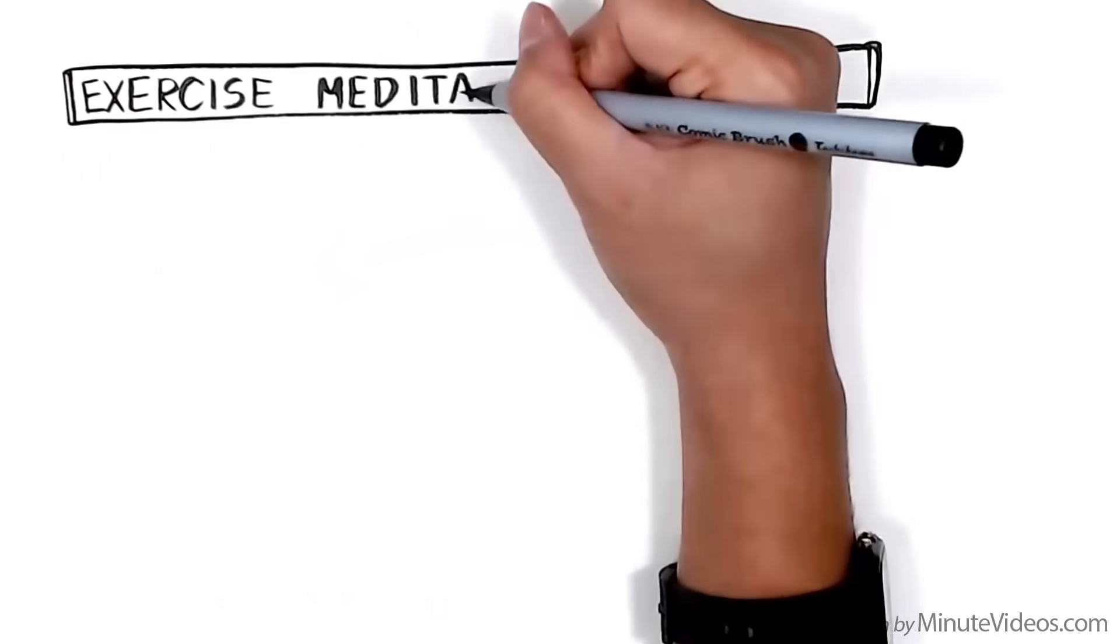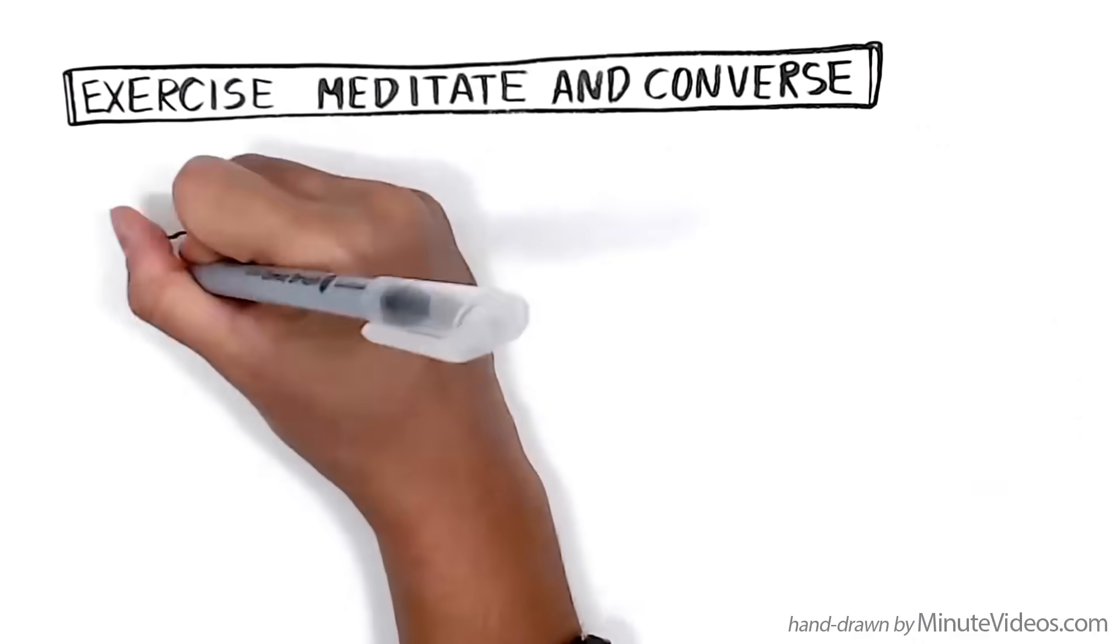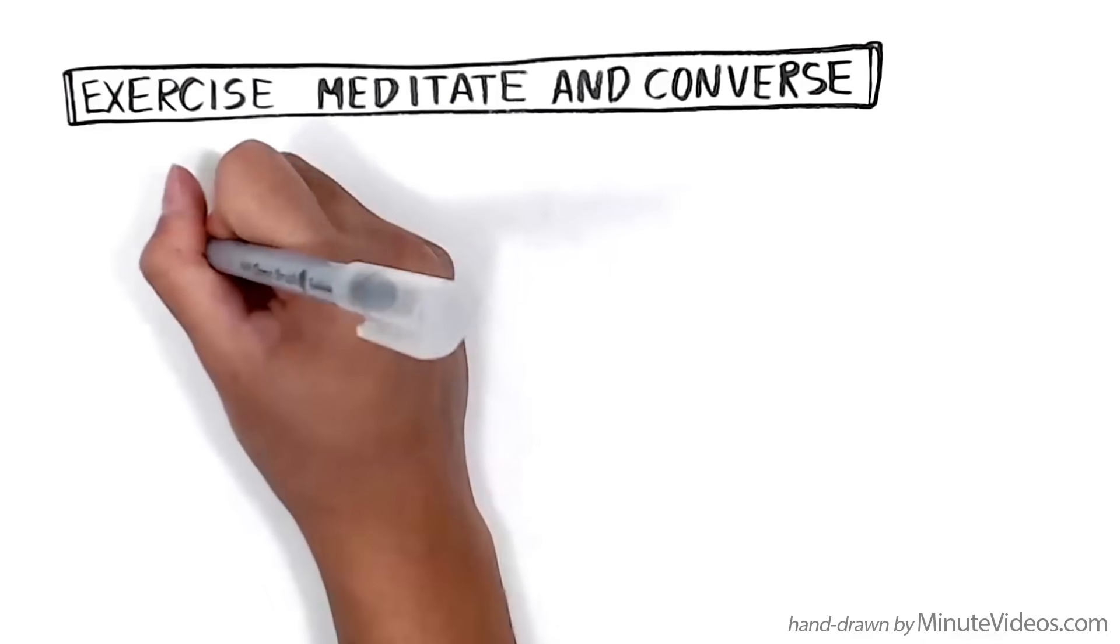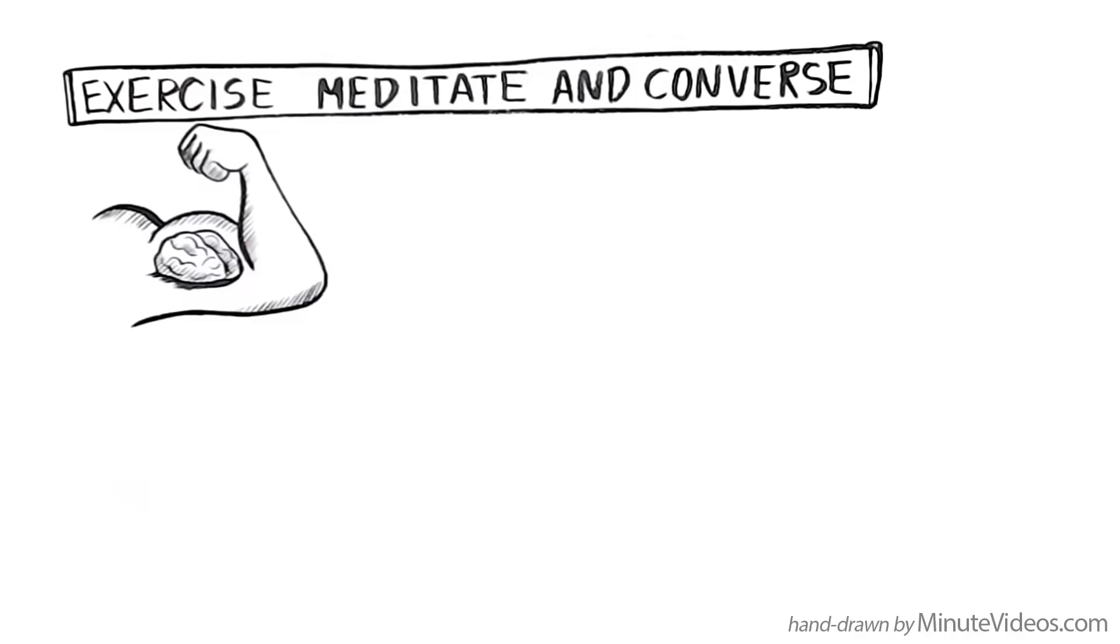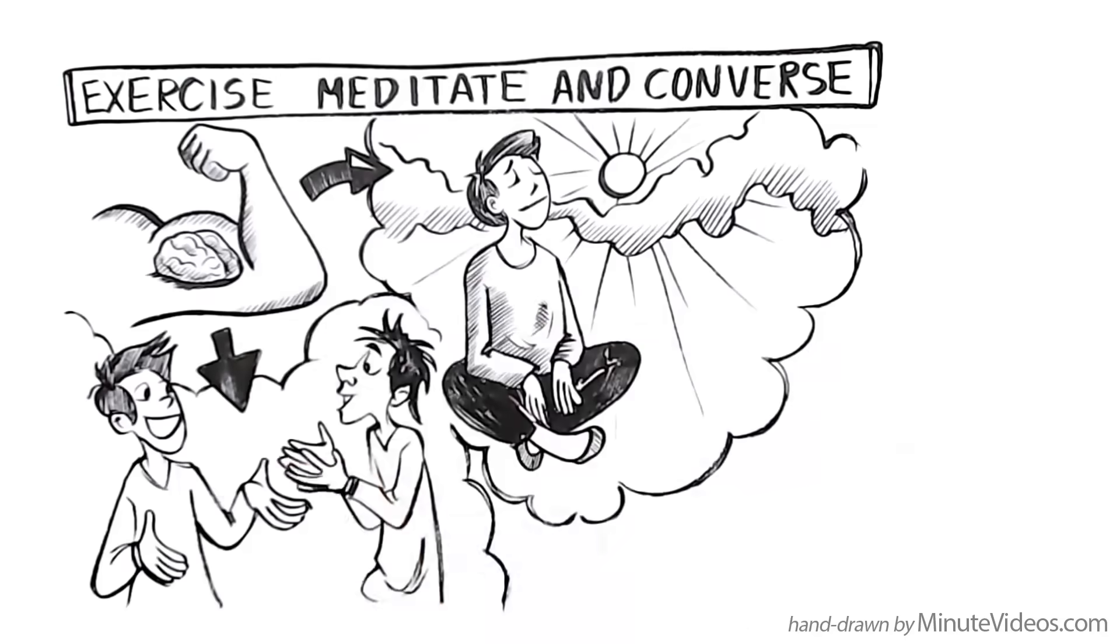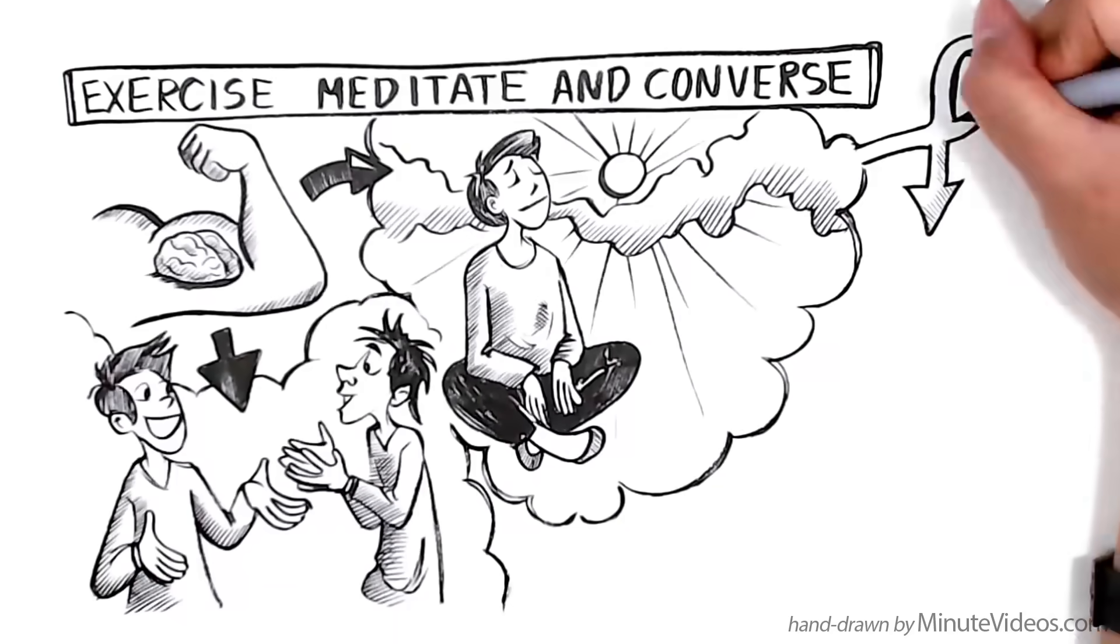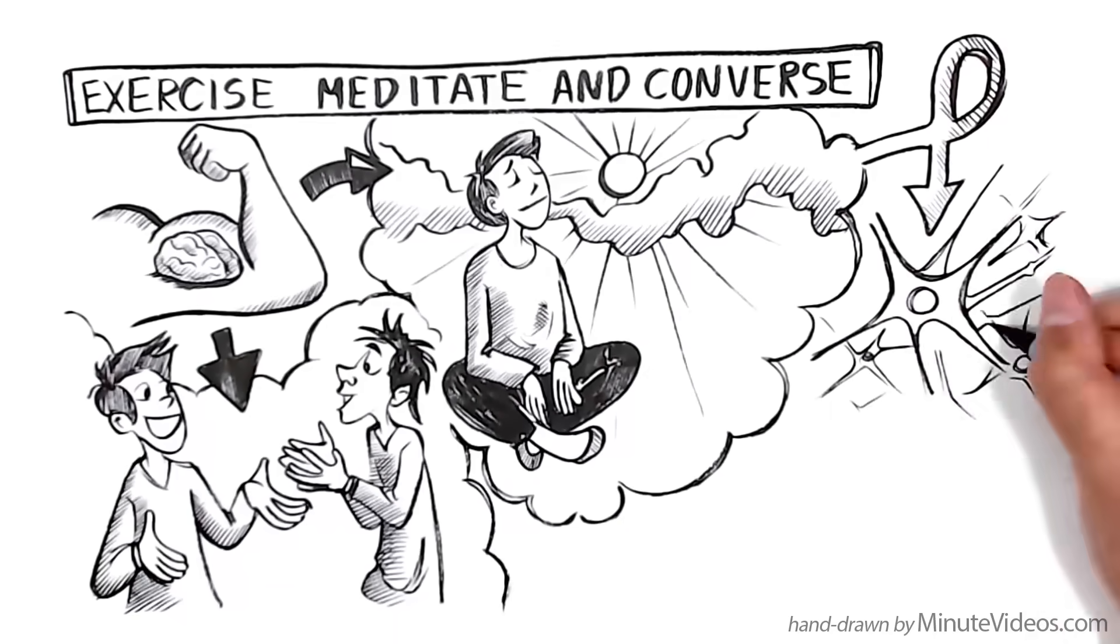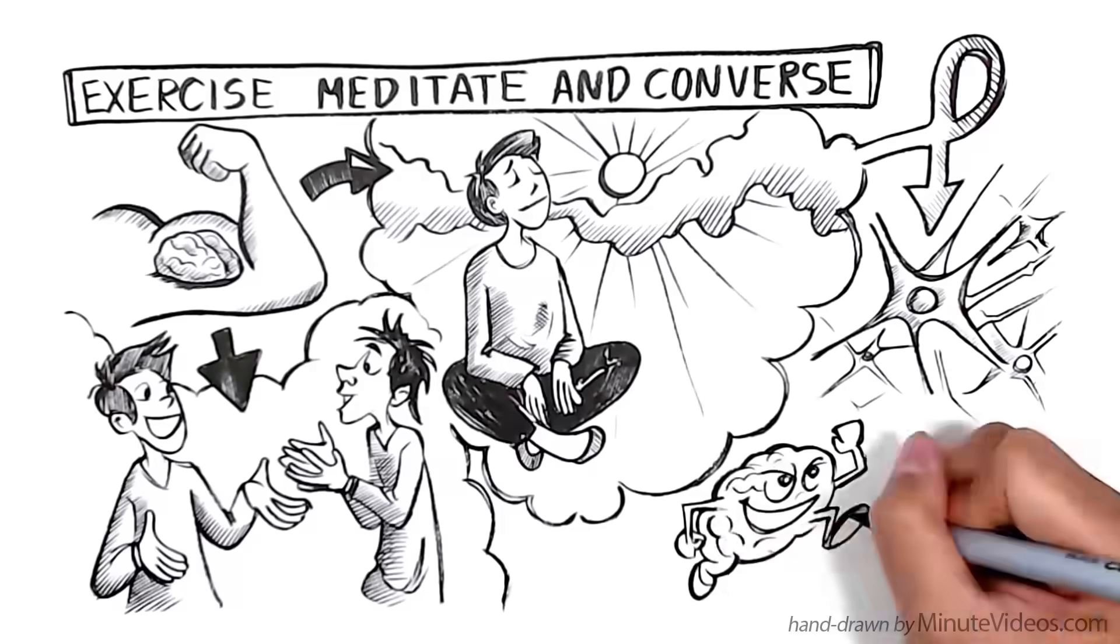Exercise, meditate and converse. There are few activities proven to grow your brain. However, physical exercise, regular meditation and good conversations apparently do exactly that. They lead to the creation of new neurons inside your brain and therefore grow its potential.